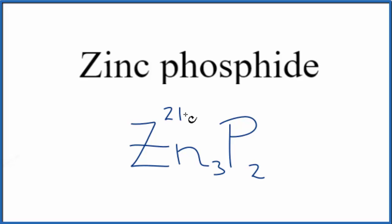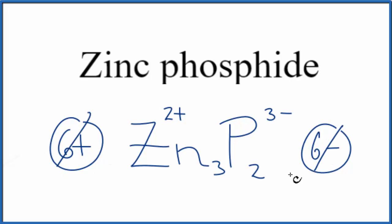We said zinc was 2+, and the phosphide ion 3-, so 3 times 2+ is 6+, 2 times 3- is 6-, these two numbers add up to 0. The net charge is 0. This is the correct formula for zinc phosphide.